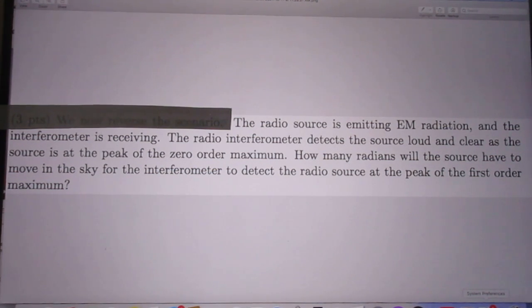Now comes the first question. How many radians will the source have to move in the sky for the interferometer to detect the radio source at the peak of the first-order maximum? That's the first question.